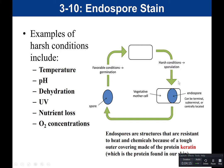Endospores can be located terminally off to one end, centrally, or subterminally, varying depending on the type of bacteria. When the cell undergoes sporulation, it packages its DNA into that keratin structure forming the endospore; eventually the vegetative mother cell breaks down and it becomes simply a spore. This spore can last for many years — on average about 50 years, but in some cases millions of years. These spores almost verge on immortality; they can survive almost indefinitely as a structure to help bacteria survive harsh conditions.